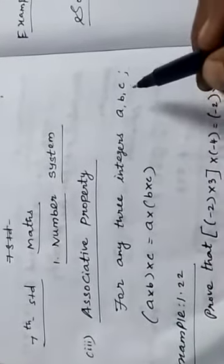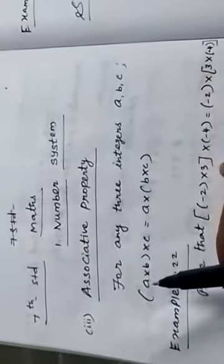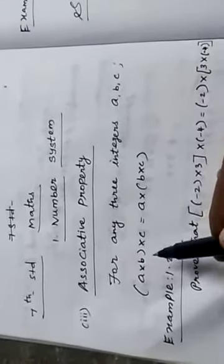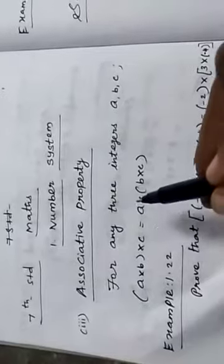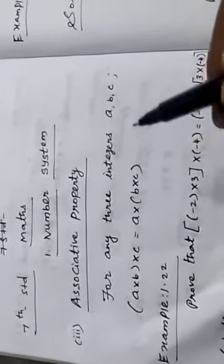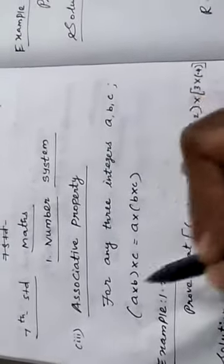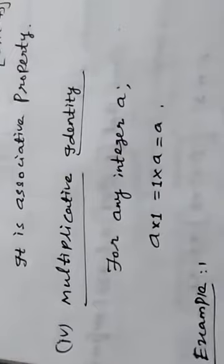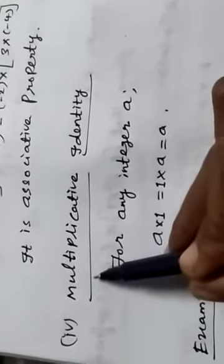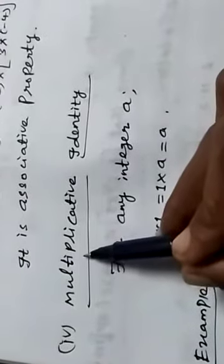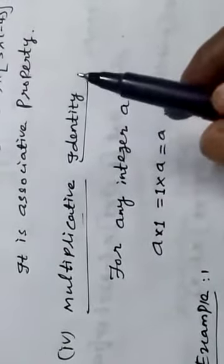For any three integers A, B, C: A into (B into C) equals (A into B) into C. This property is known as associative property. Now we go to the next property — the fourth property: multiplicative identity.